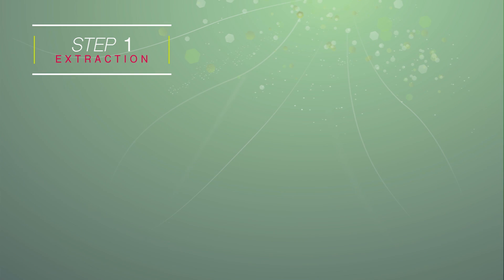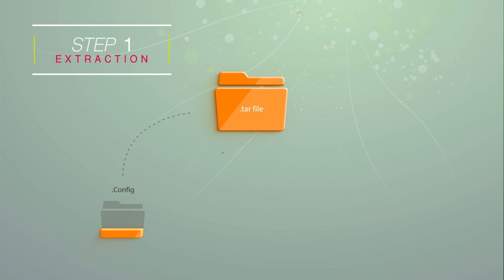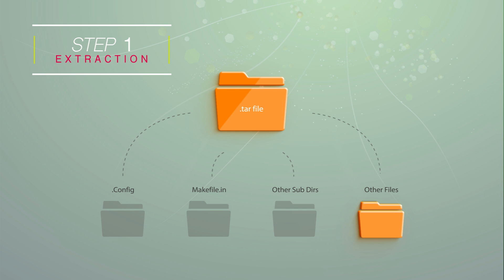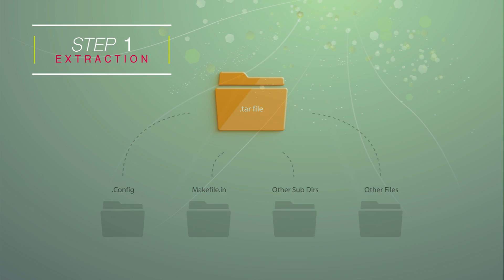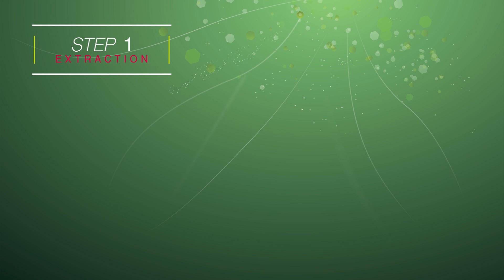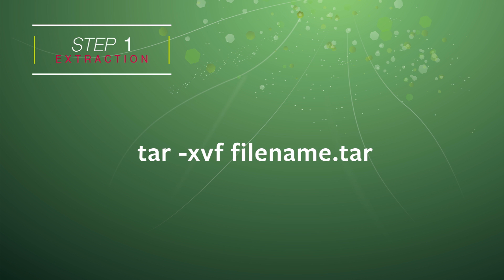Now the first step is extraction — here we extract the archive file. The process is similar to the extraction of a zip or a rar file using WinZip or WinRAR in a Windows environment. We extract the tar file using the following command. In the terminal we type: tar, then a space, then dash lowercase x for extraction, lowercase v for verbose — you can omit v if you want — then lowercase f for file name, then a space, and then type in the file name, for example filename.tar. This syntax is universal and applies to all tar files.